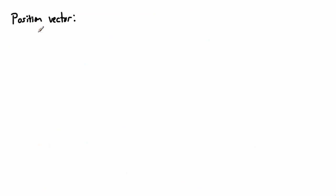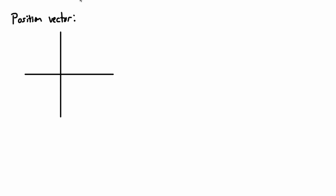Now we can start working with position vectors — that's another really important definition. We define a position vector using a set of axes with origin O at (0, 0). There's some random point A with some coordinates, and we draw a vector from O to A. We define this as the position vector little a. A position vector is a vector that gets us from the origin to some point.